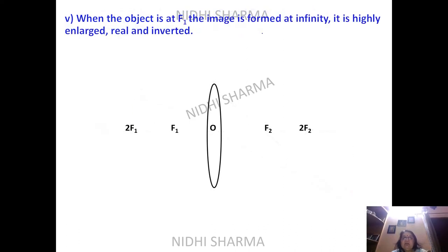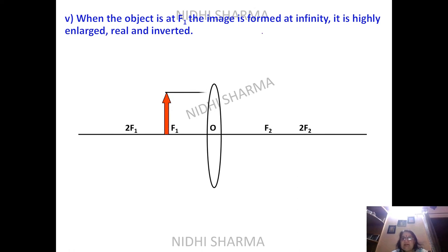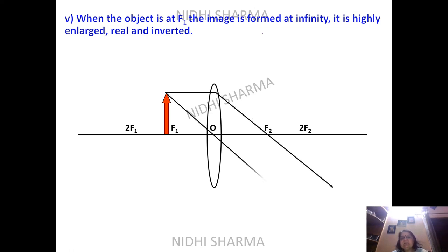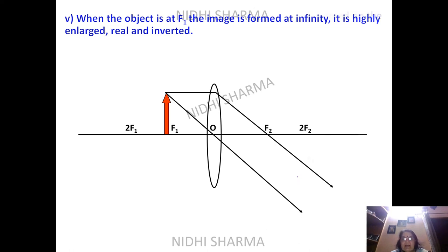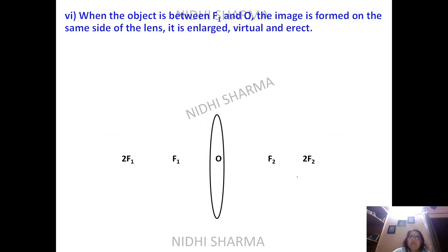The fifth case: when the object is at F1, the image is formed at infinity. With the object at F1, the refracted rays emerge parallel to each other, indicating the image goes to infinity. The image is highly enlarged, real, and inverted.